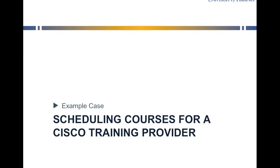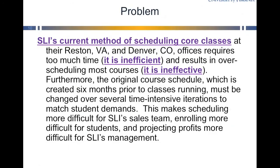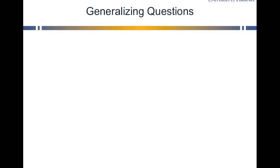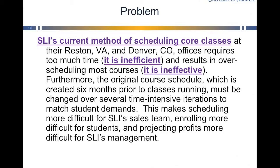Now let's look at an example. This is for a company that is a Cisco training provider and they had a problem with scheduling their courses. They have two offices and it takes too much time and results in over-scheduling of most courses. The original course schedule, created six months prior to classes running, must be changed over several time-intensive iterations to match student demand — adding extra sections of certain courses, eliminating others. This makes it very difficult for the sales team trying to enroll students, for students trying to schedule classes, and for the company to project profits.